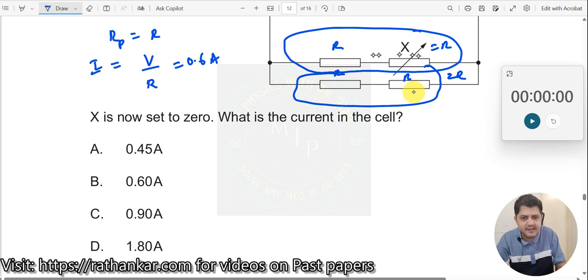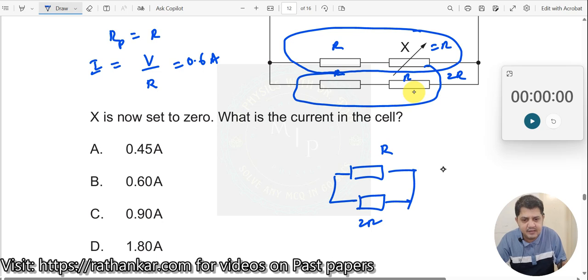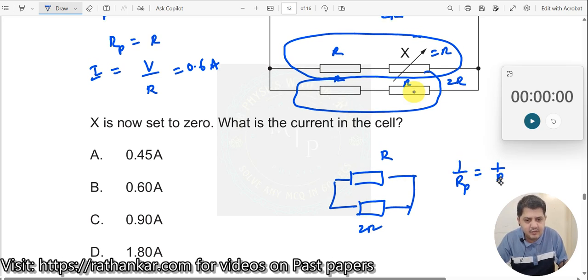In this case, this resistance will become R here. Let me write it down separately. This will become R here and this one will become 2R. What is the parallel resistance here? The parallel resistance will be 1 by Rp equals 1 by R plus 1 by 2R.